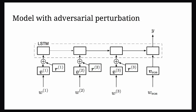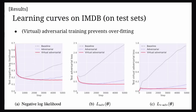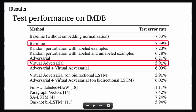We go into more detail in the paper. Looking at the learning curves on the test set, you can see that with the baseline, without adversarial training, overfitting happens very quickly. With adversarial training and with virtual adversarial training, overfitting is much less likely.